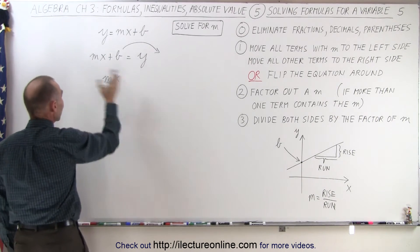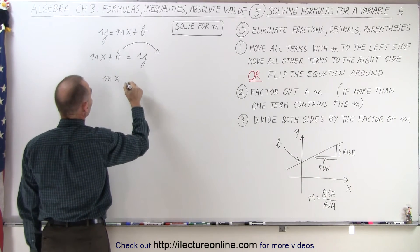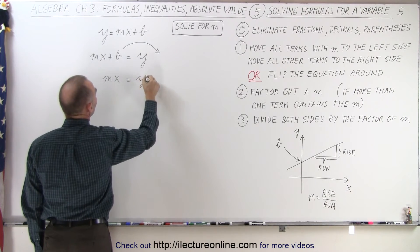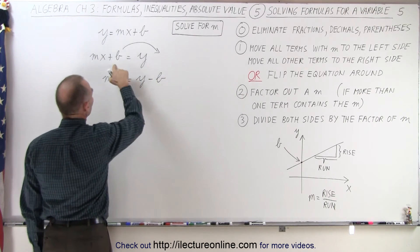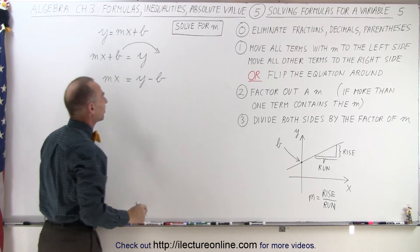We don't care about the x's. All the m's on the left side, everything else on the right side, so this becomes y minus b. When I cross the equal sign, I change the sign of b.